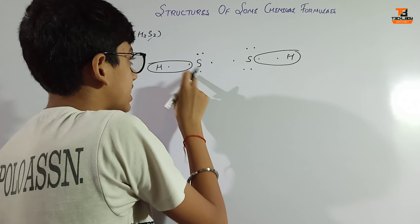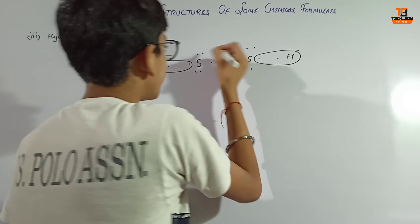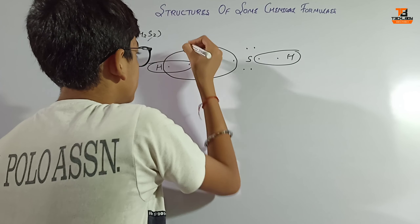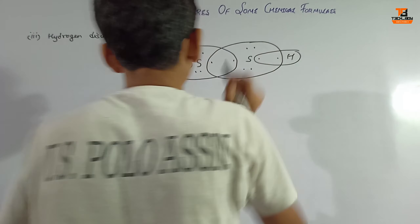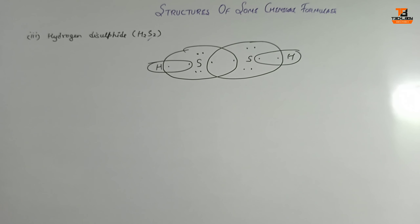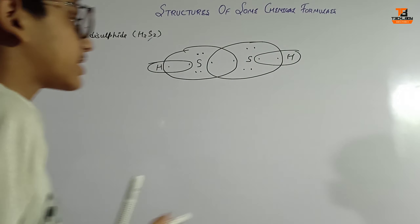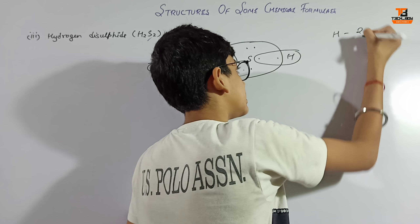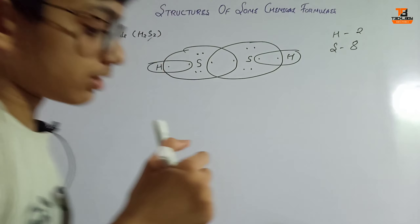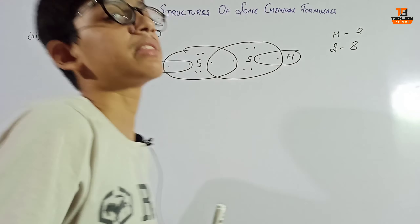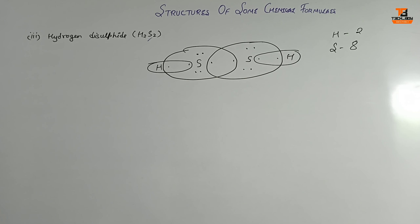Sulfur says: give me one electron. So it will be structured like this, and the same condition arises on the other side. Both sulfur atoms make their octet and both hydrogen atoms make their duplet. Hydrogen has two electrons and each sulfur has eight electrons - hydrogen makes a duplet and sulfur makes its octet completely. So we have also completed the third one.